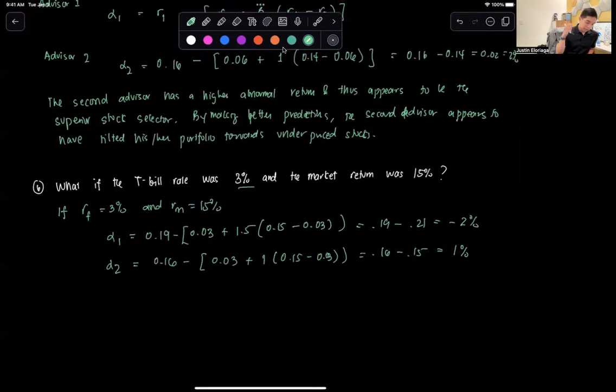In here, clearly, we still see that the second advisor is making the better choices and is the superior stock selector, but also we notice that the decisions and predictions of the first investor appear quite valueless in general, because you have a negative return and the valuation is generally worse.